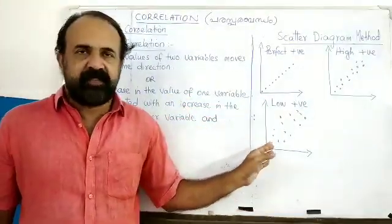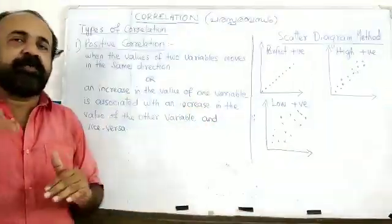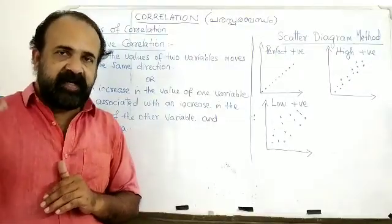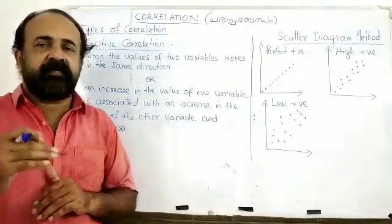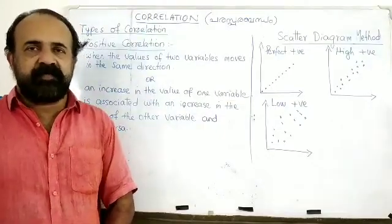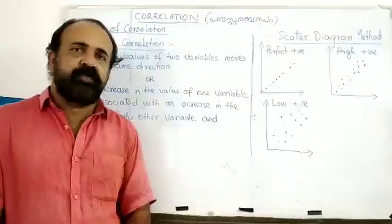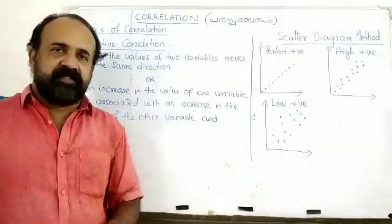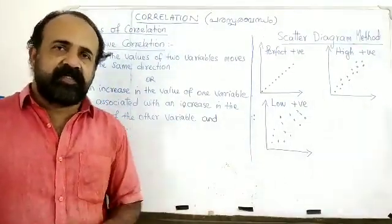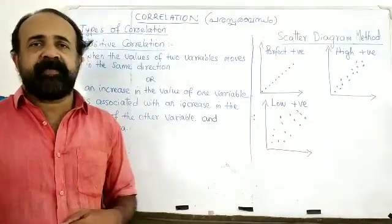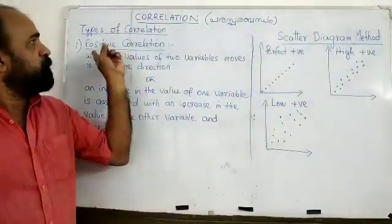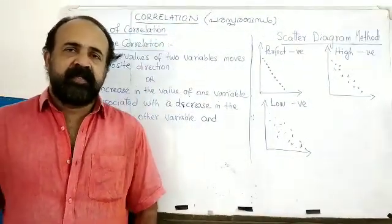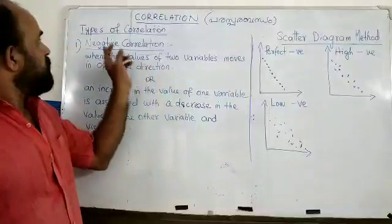Let us summarize the result of positive correlation for the two variables. The second type is negative correlation.